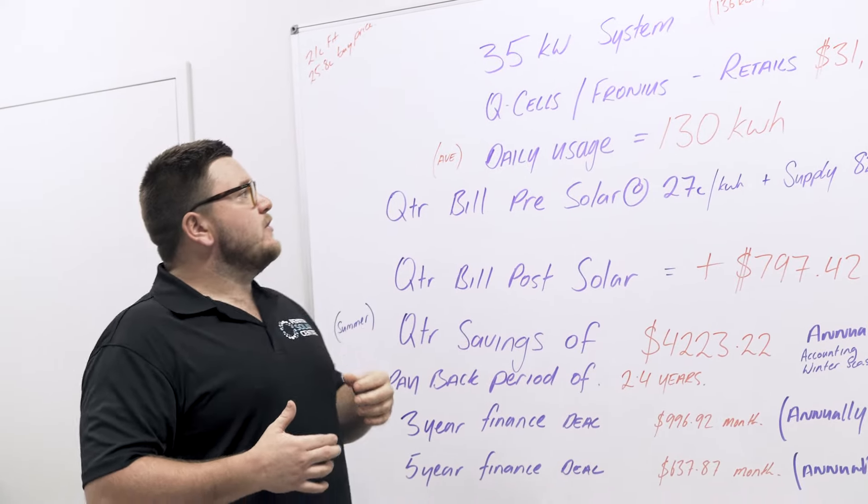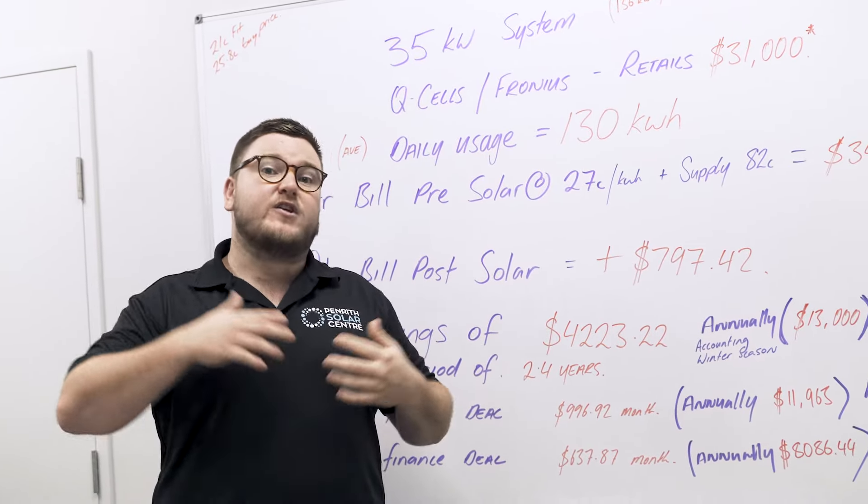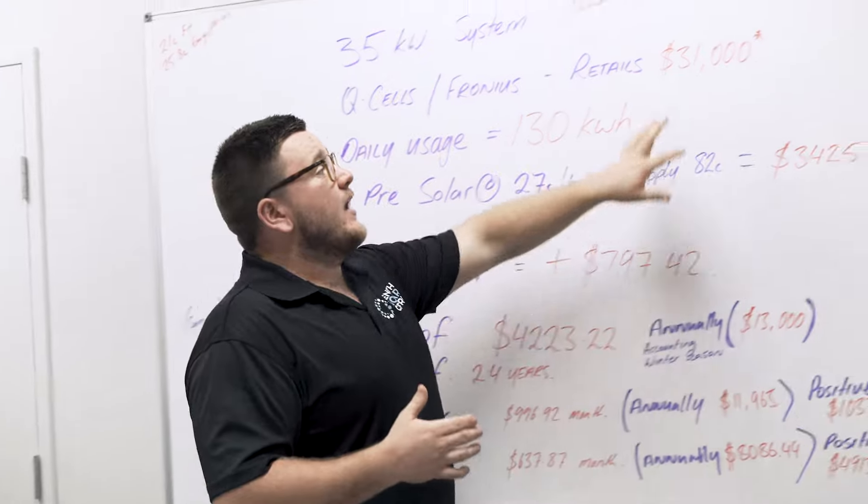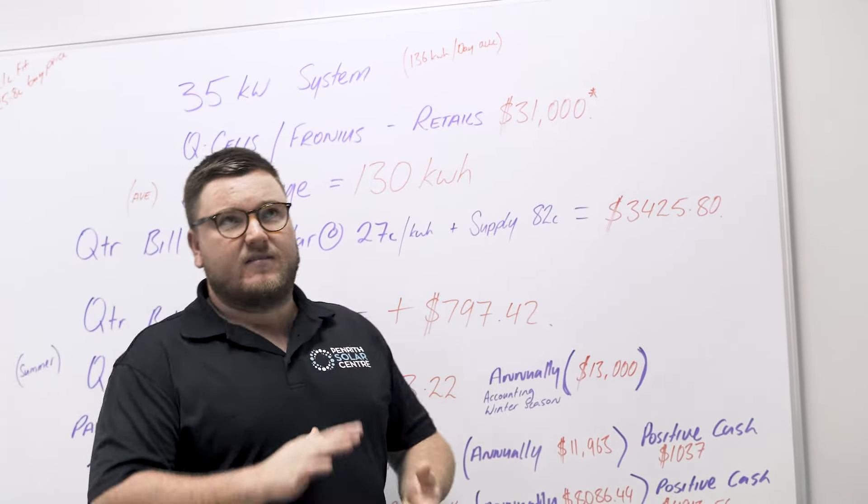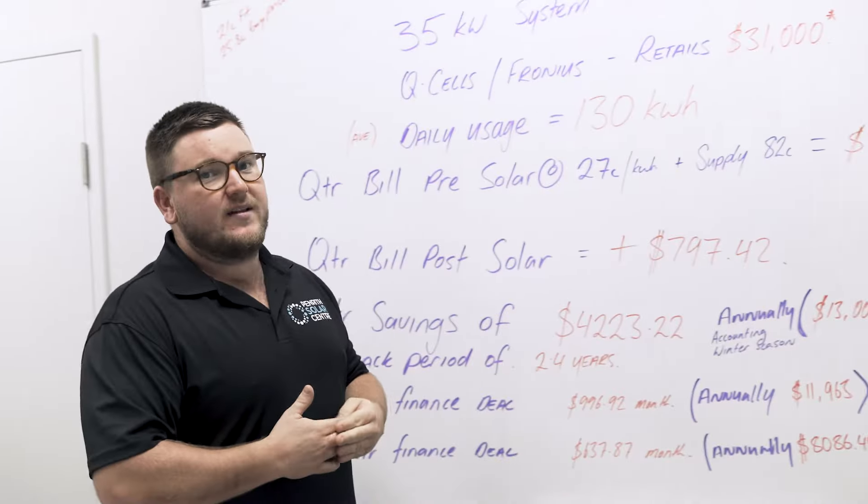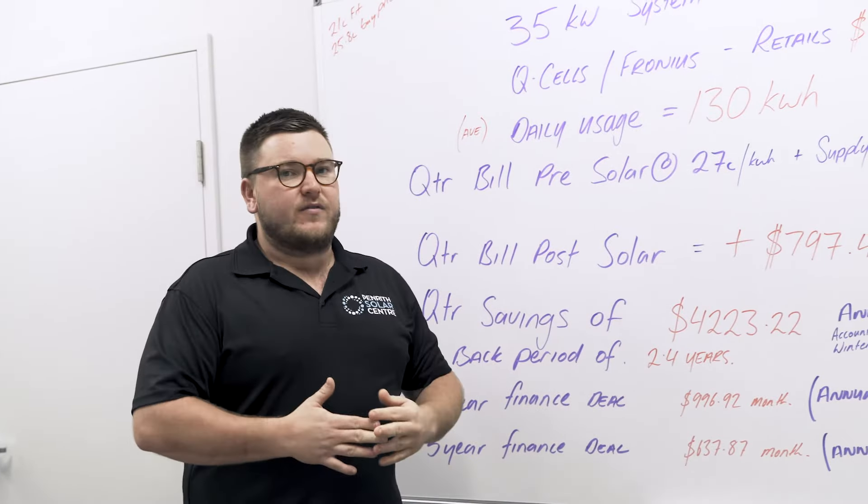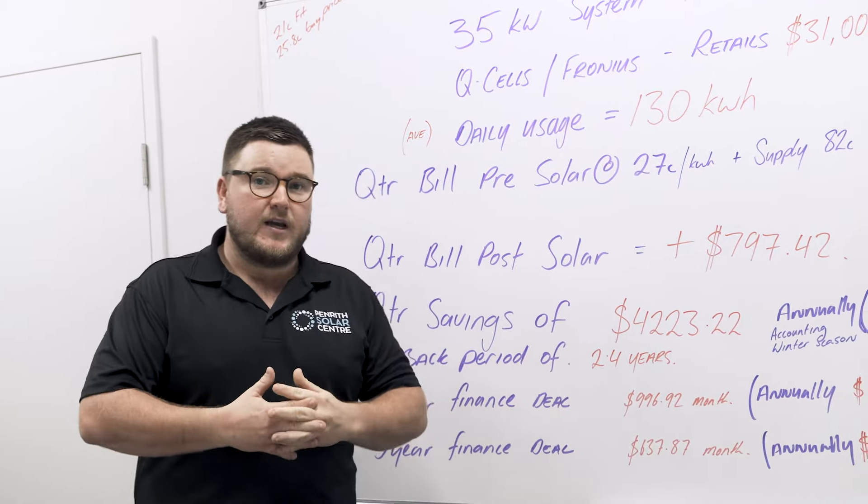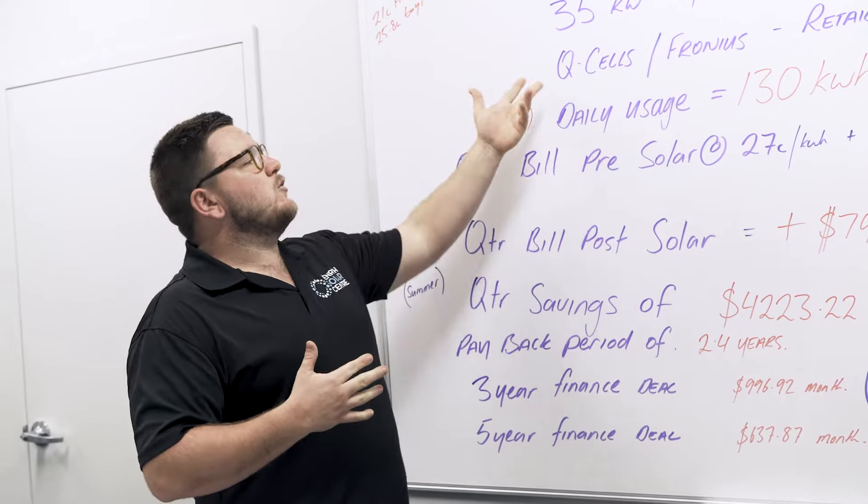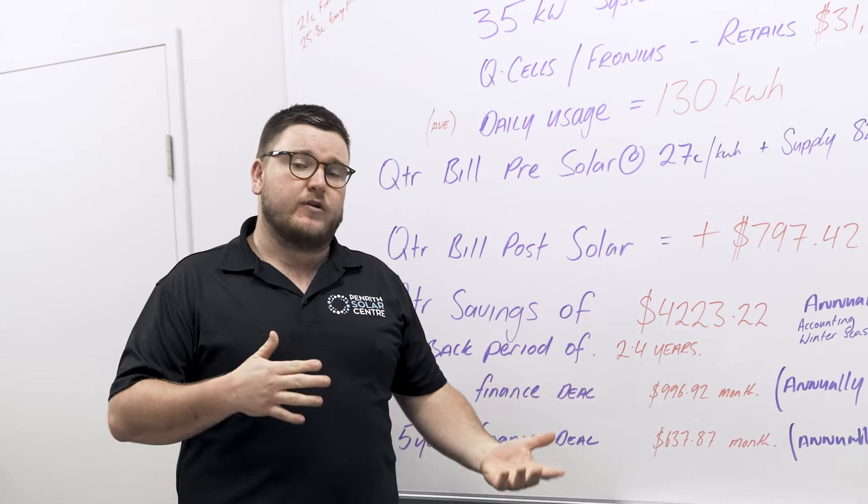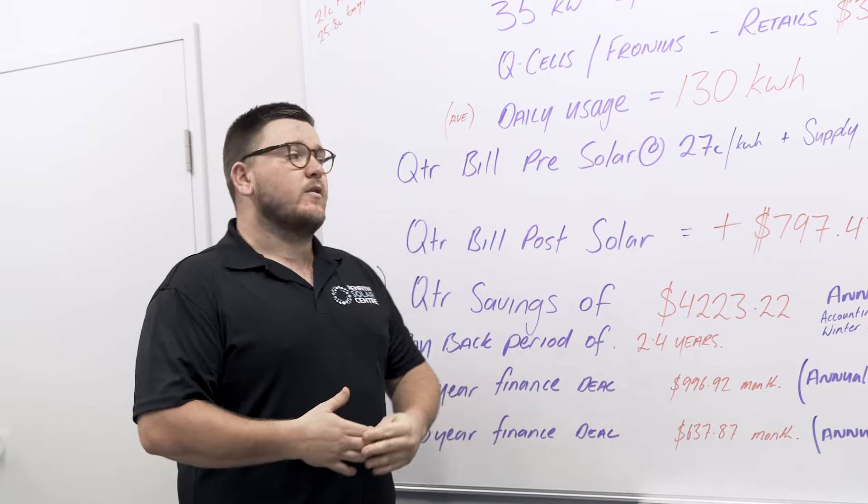Now if you were to use the Q-cells G5 plus or the G6 plus, you would expect to pay a little bit more, probably around the $36,000 to $38,000 mark for that system. But with that you would get a full 25 year product warranty and performance warranty, whereas our modules that we've used have a 12 year product warranty and a 25 year performance warranty.